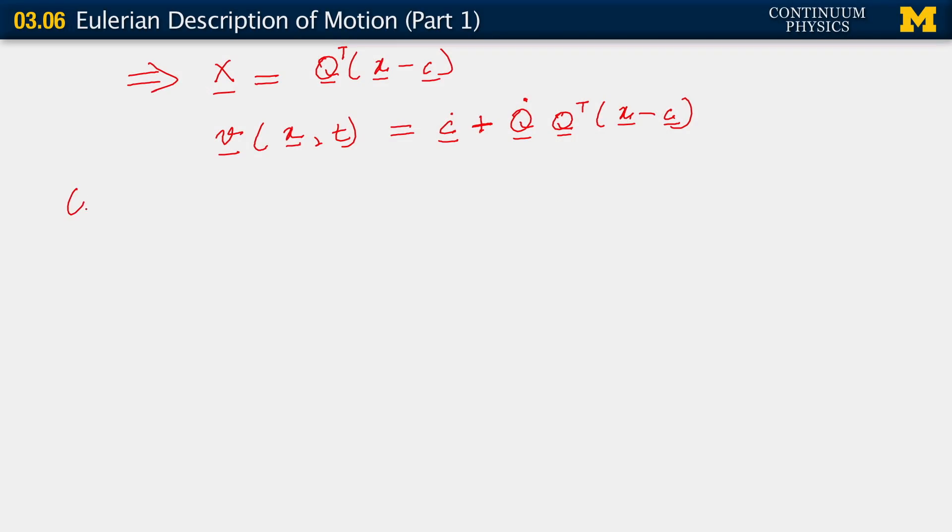Now we're actually done here with writing out the Eulerian velocity, but we're going to do a little more work to make this more transparent and to connect back to something that you probably know from your earlier study of rigid motion. In particular, what we're going to do is focus our attention for about a minute on this quantity, Q dot Q transpose. In particular, we're going to note that we can rewrite this thing as follows. Let's start out with Q Q transpose, which, because Q belongs to SO(3), is equal to the second order isotropic tensor. It's an orthogonal tensor in three dimensions.